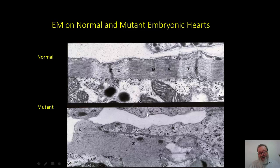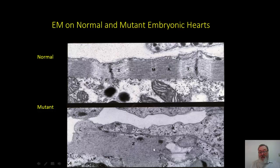Looking by electron microscopy at the hearts of normal and mutant siblings makes it obvious why mutant embryonic hearts failed to beat. A normal heart has well-organized sarcomeric myofibrils, complete with A bands, I bands, Z lines, and M lines. In mutant cells, instead of these organized sarcomeric myofibrils — which are the machinery for cell contraction — you get amorphous proteinaceous collections, with perhaps a few remnants such as dense areas similar to Z lines, very few thick filaments, and almost no thin actin filaments.